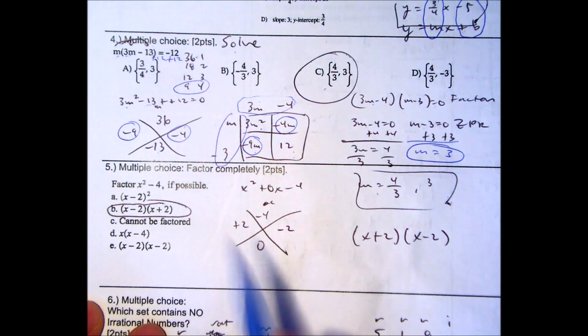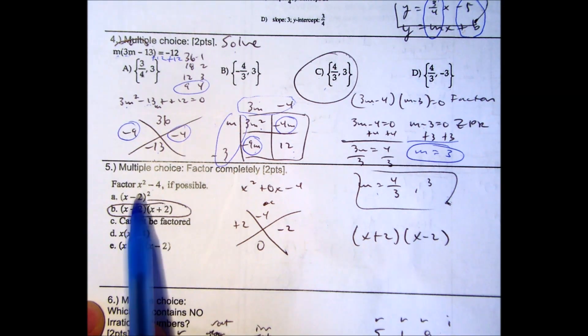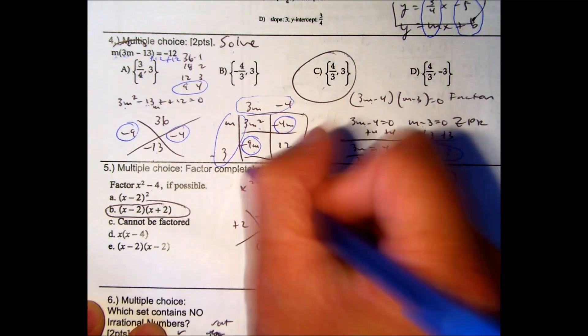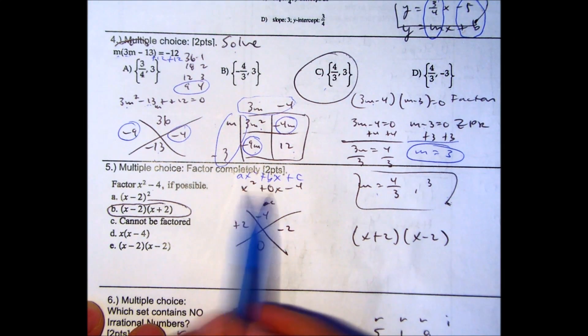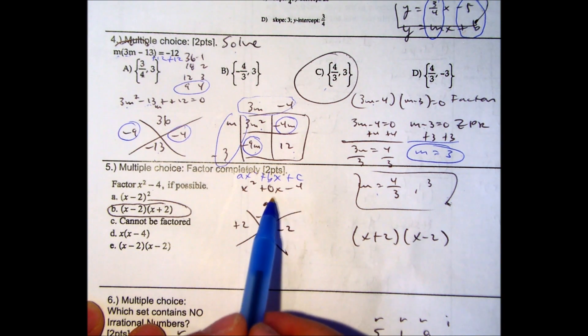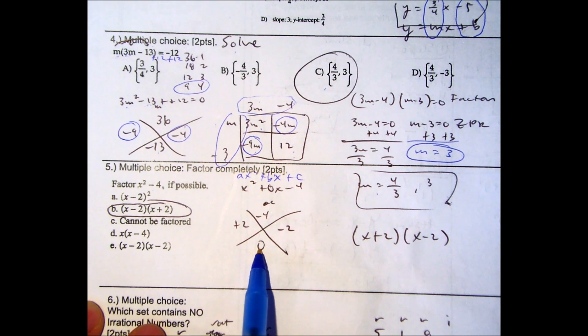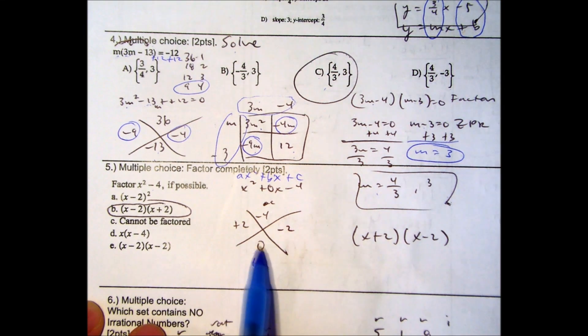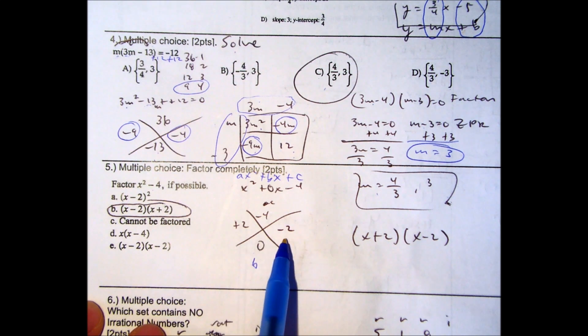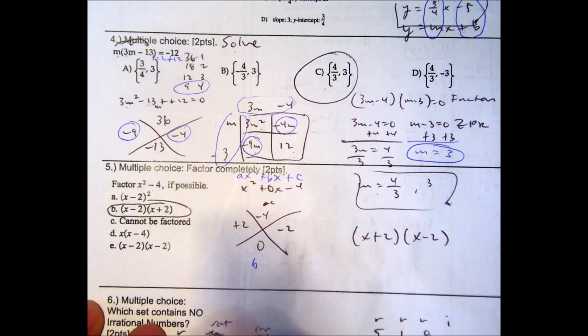And last question for this class. Factor X squared minus 4 if possible. Here I recognize I have an A value and a C value, but I don't have a B value. So in standard form for quadratics, AX squared plus BX plus C, I don't have a B value. You can add that. I usually call that a placeholder. X squared plus 0X minus 4. So A times C is negative 4 and my B value is 0. Are there two numbers that will multiply to be negative 4 and then add to be 0? Any time it's a 0 for the B value, these two numbers are going to be exactly the same, but opposites. One will be positive, one will be negative. If your A value is equal to 1, you don't have to do the box. My answer is X plus 2 times quantity X minus 2. Those could be interchanged, and that would be the letter choice B.